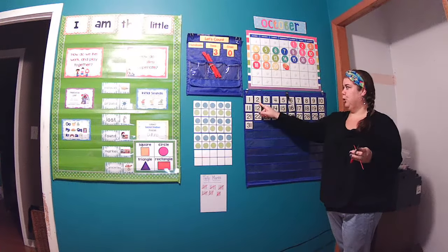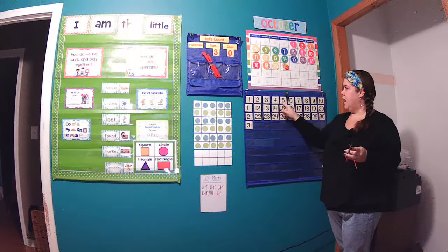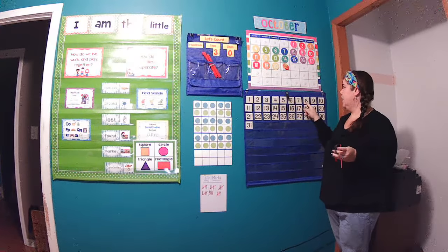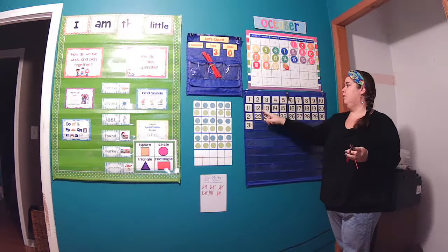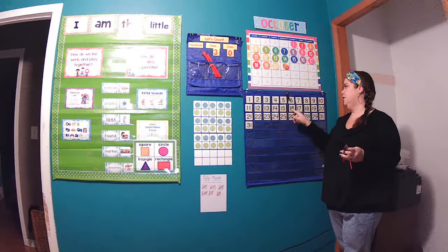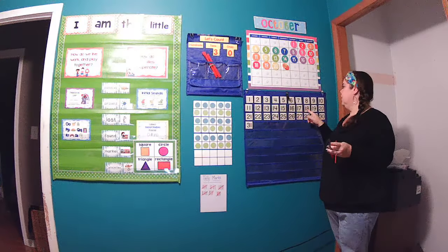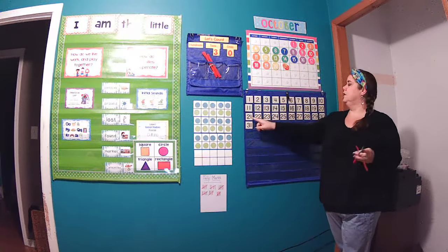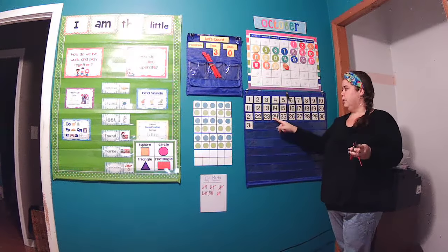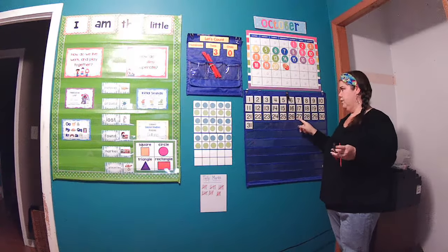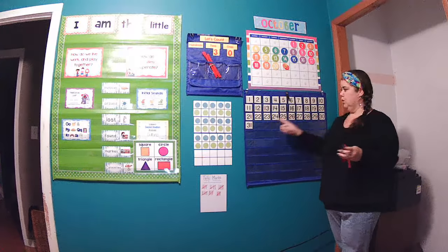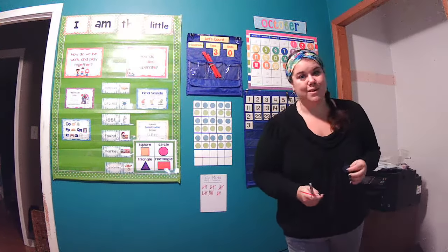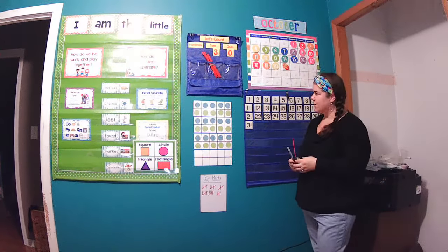Ready? 1, 2, 3, 4, 5, 6, 7, 8, 9, 10, 11, 12, 13, 14, 15, 16, 17, 18, 19, 20, 21, 22, 23, 24, 25, 26, 27, 28, 29, 30, 31. So 31 days of school so far in kindergarten.